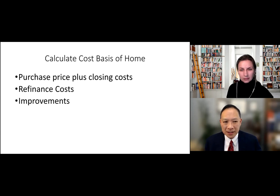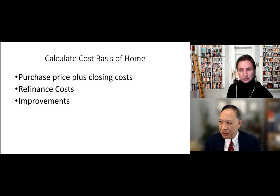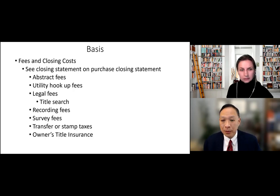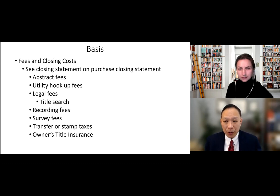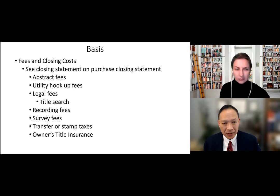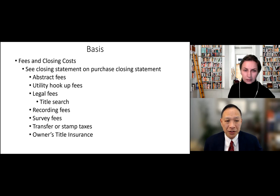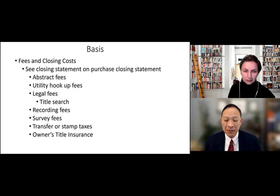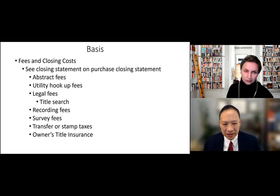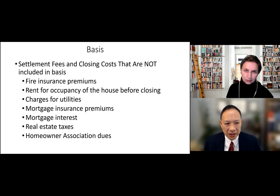The cost basis includes: purchase price plus closing costs plus any refinance costs plus improvements made to the home. Your purchase closing statement is important — it includes abstract fees, utility hookup fees, legal fees, title search, recording fees, survey fees, transfer stamps, and owner's title insurance. Not everything on the closing statement adds to basis — the first year of fire insurance premiums, rent-back payments, utility costs, mortgage insurance premiums, mortgage interest, and real estate taxes do not count toward basis.